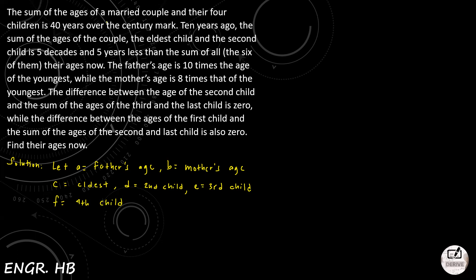The sum of the ages of the married couple — A plus B — and their four children C, D, E, and F is 40 years over the century mark. Century mark means 100 years, so 40 plus 100 equals 140 years. Therefore A + B + C + D + E + F = 140. We call this Equation 1.